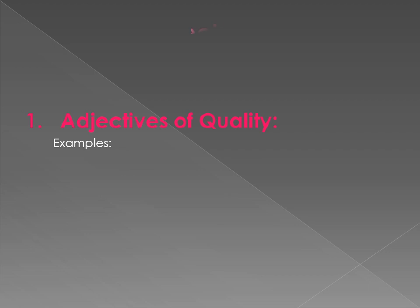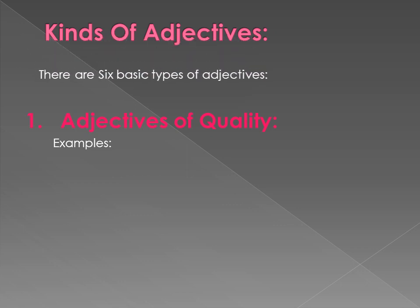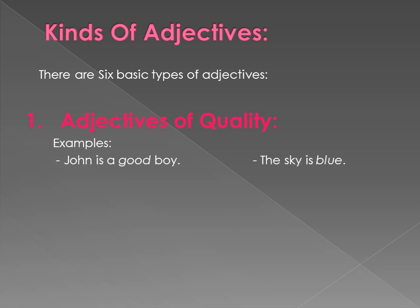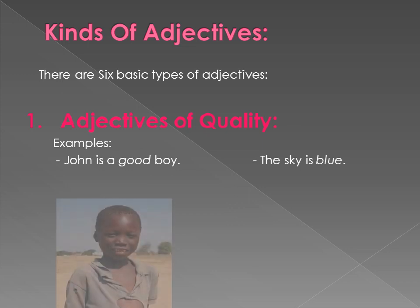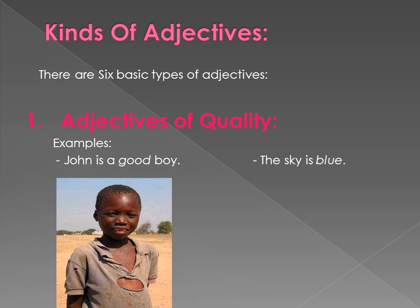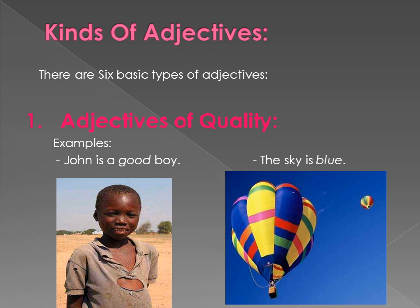There are different types — kinds — of adjectives. There are six types of adjectives. First is adjective of quality. For example: 'John is a good boy. The sky is blue.' What type of boy is John? Good. The word 'good' tells the quality of John. 'The sky is blue' also tells the quality of the sky.